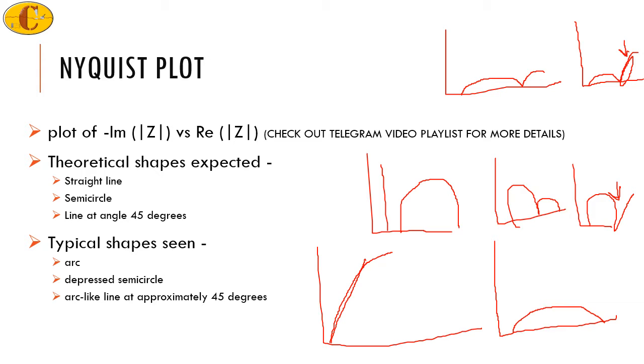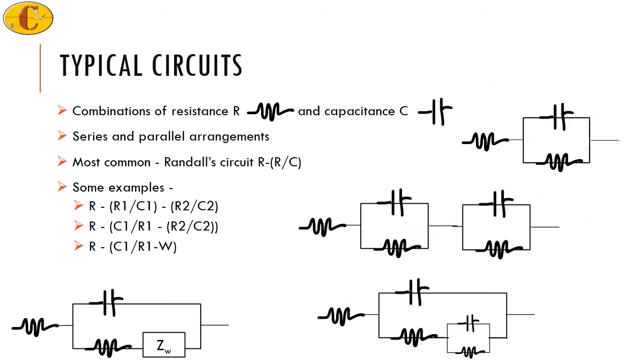Because such Nyquist plots are obtained in practical, the usual method is to go for the circuits which will fit them. So that is usually the first step that is done. The circuits are electrical circuits and they consist of resistance and capacitance. These may be in serial and parallel arrangements and the most common is the Randall circuit. So Randall circuit is a resistance and then a parallel arrangement of capacitance and resistance.